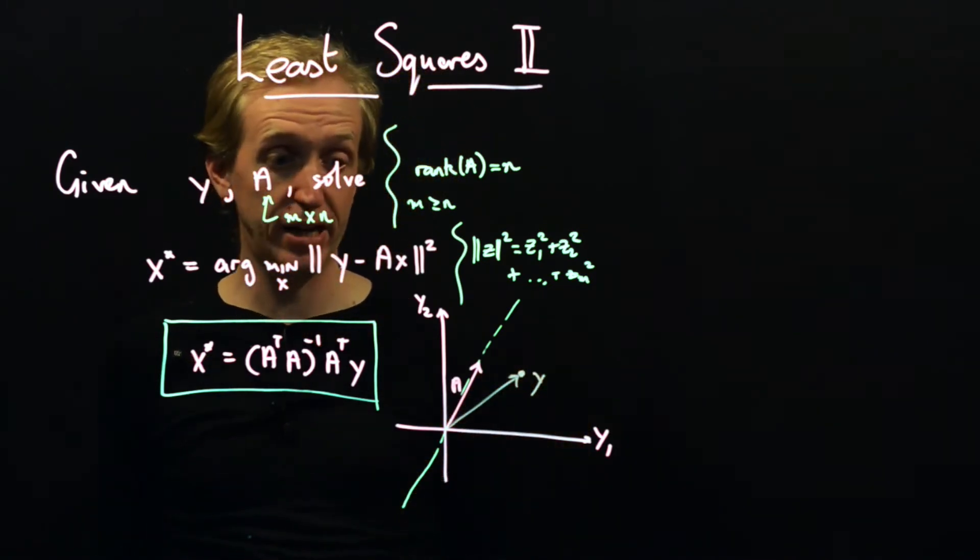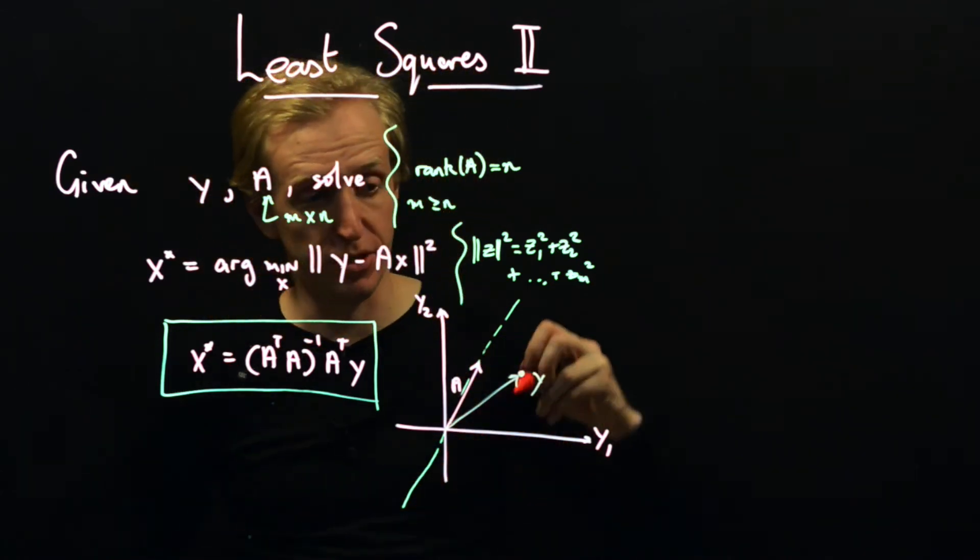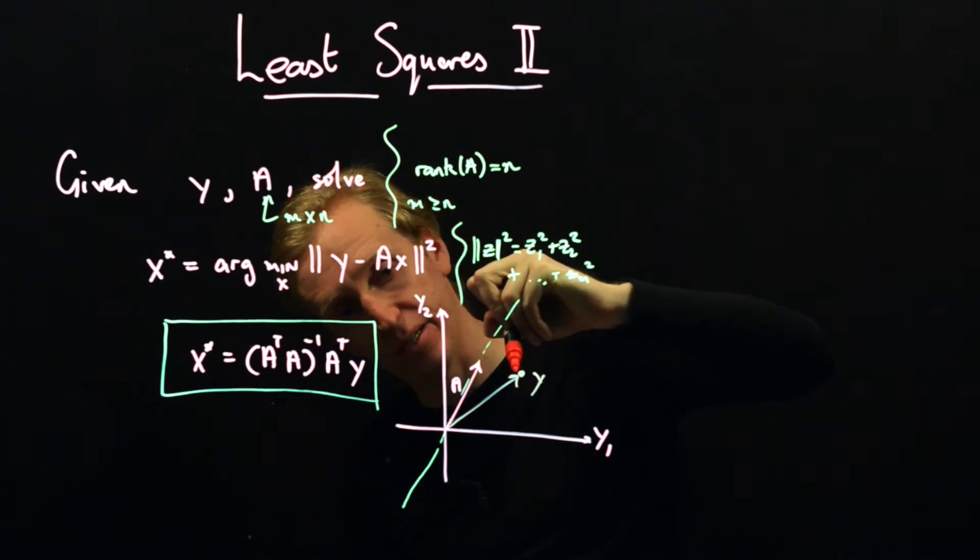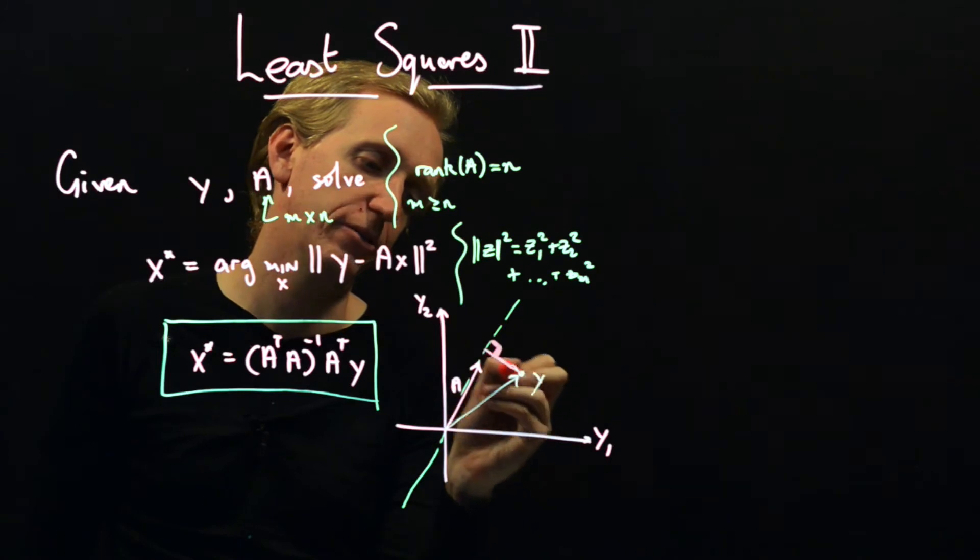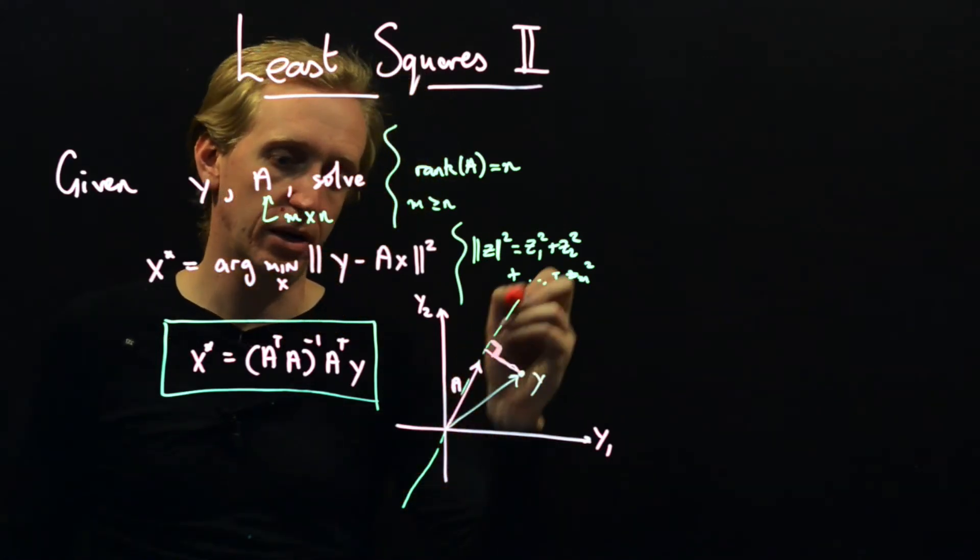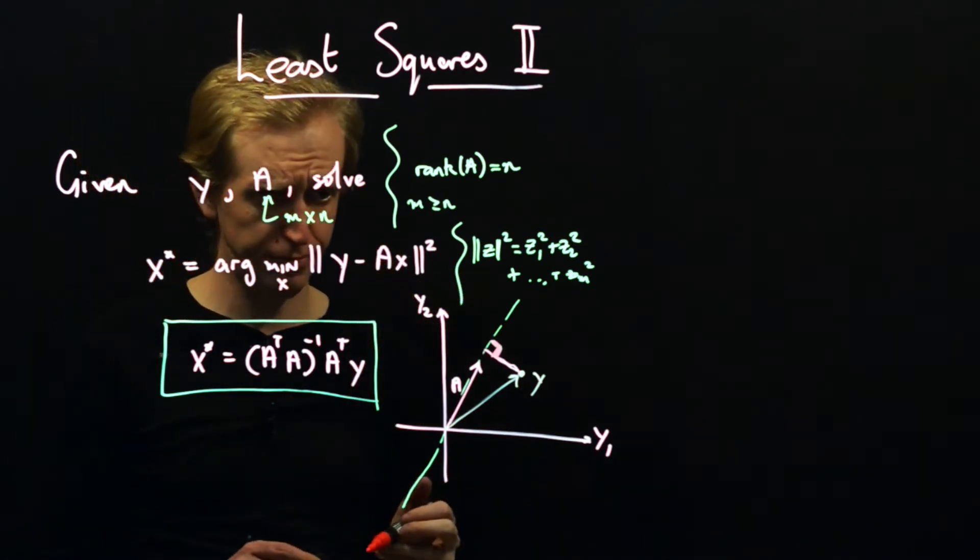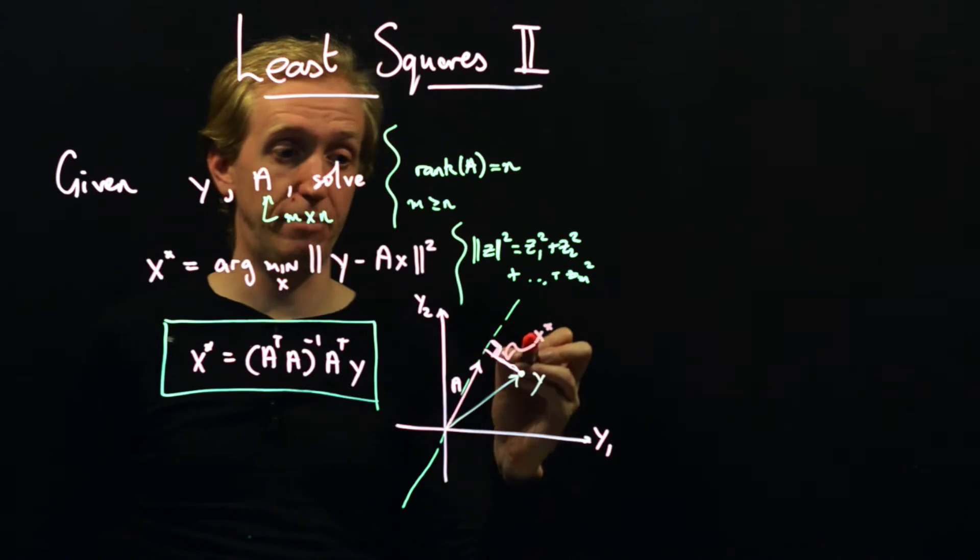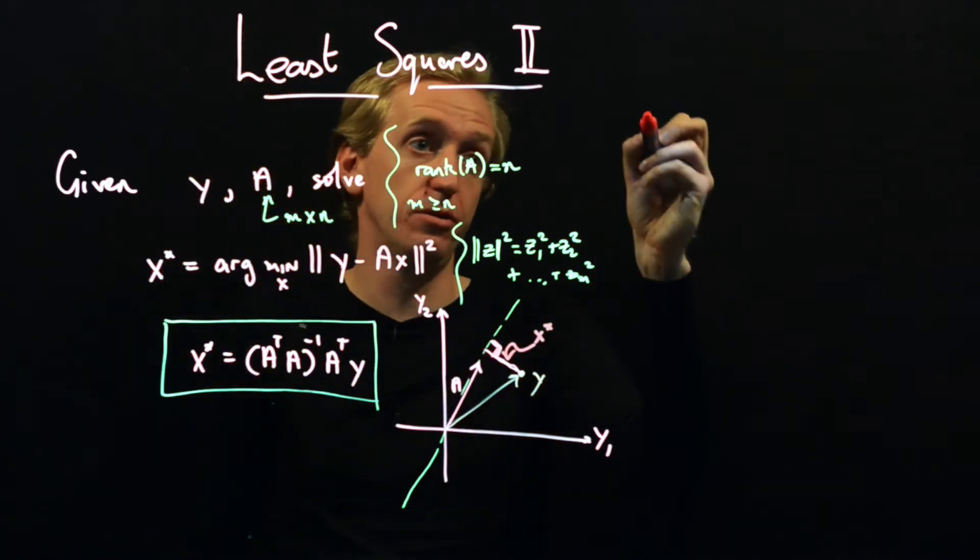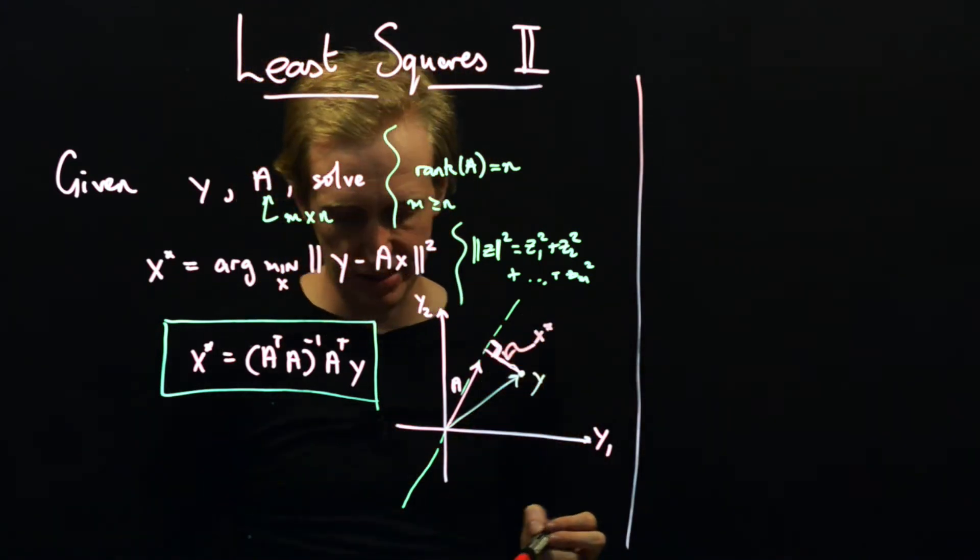Which value of x should we pick? So different values of x just pick different points along this line. And so we want to pick the value that gets us as close as possible to y. And once again, we get that by drawing a line out here at right angles to the column space of the matrix A. So this is our optimal solution, x star. And x star is also given by this formula. So now we'll just derive this and also indicate how we can sort of capture this orthogonality condition.